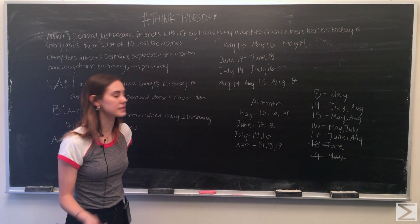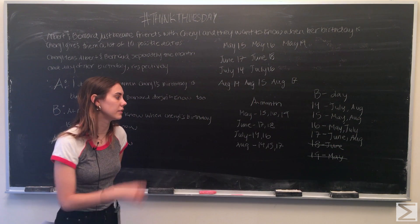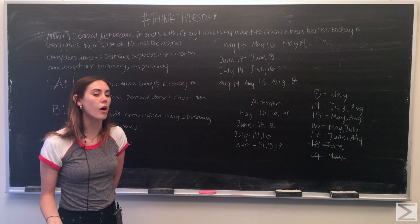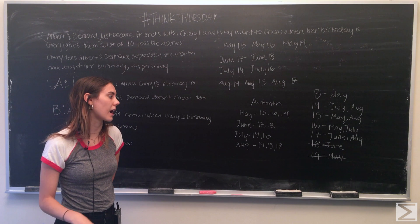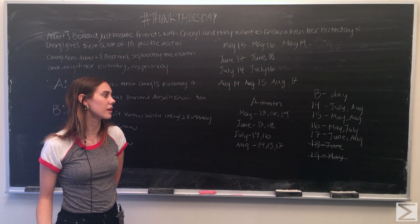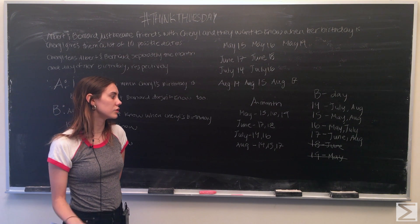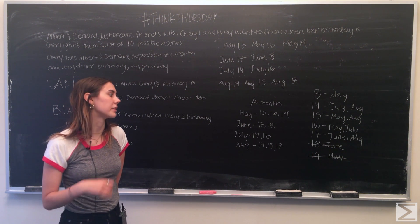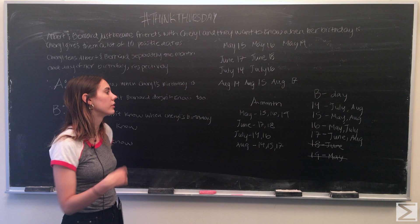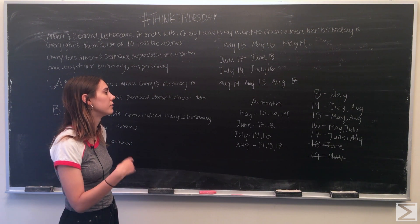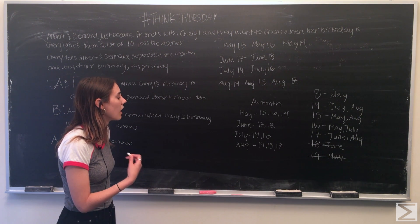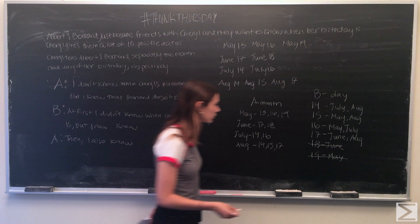Since Albert is confident that June and May aren't the month Cheryl's birthday is in, we can go through and cross out those months from the rest of Bernard and Albert's tables.